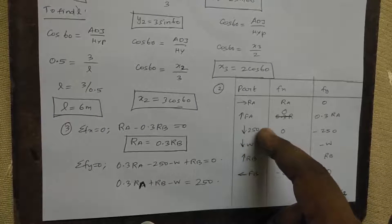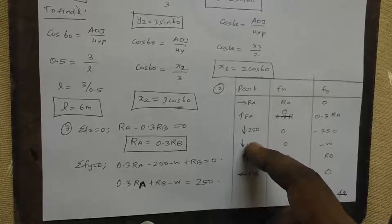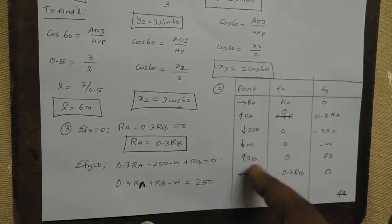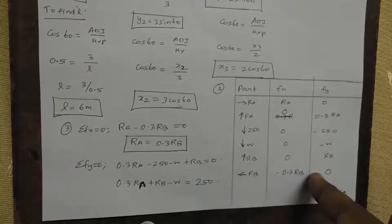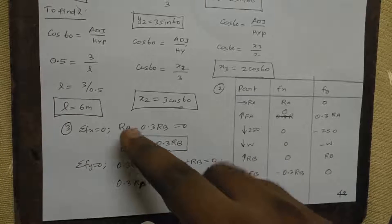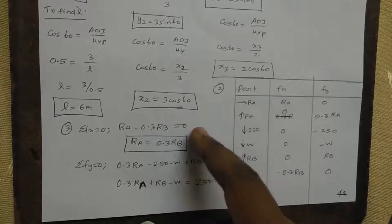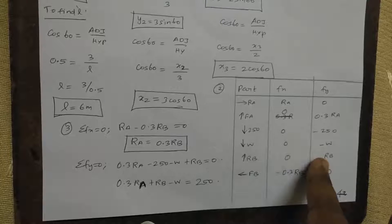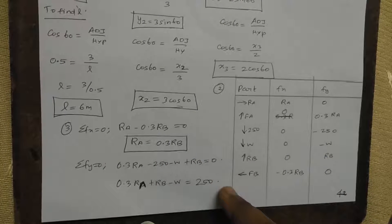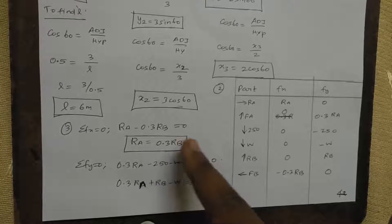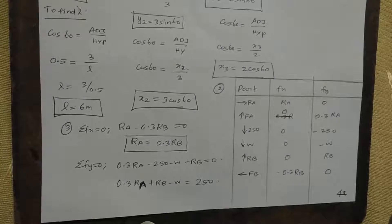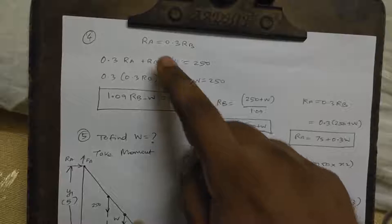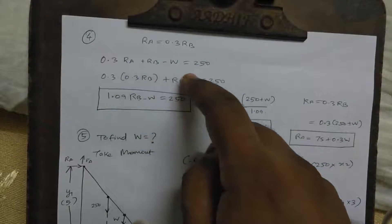For the X direction: RA minus 0.3RB equal to 0, therefore RA equal to 0.3RB. For the Y direction: 0.3RA minus 250 minus W plus RB equal to 0. That gives us 0.3RA plus RB minus W equal to 250.